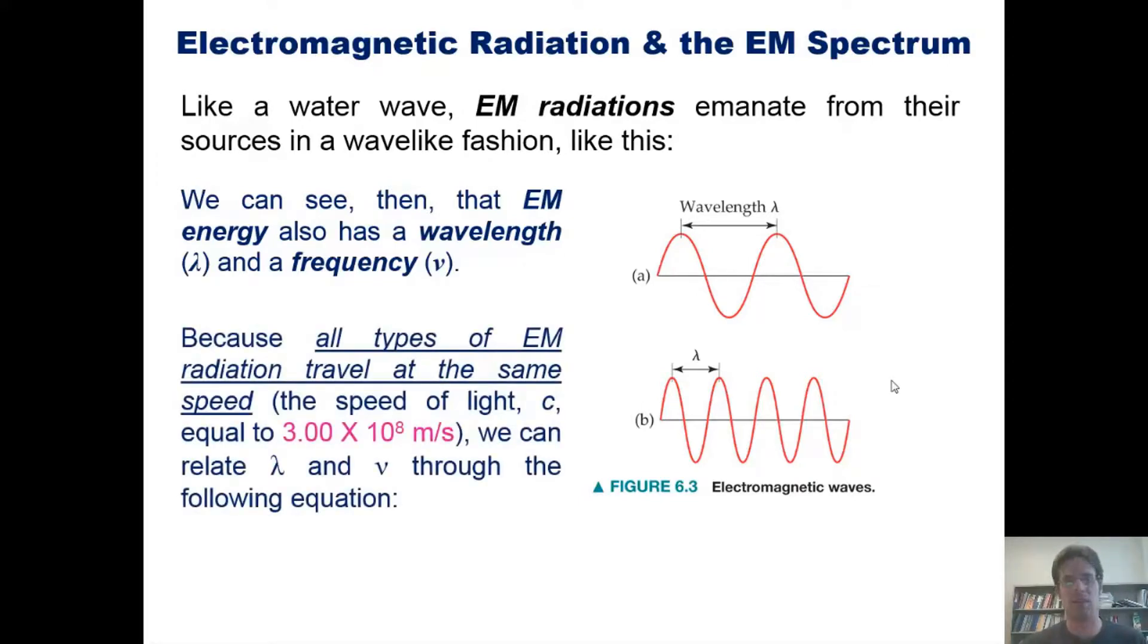It turns out all types of EM radiation travel at the same speed, which is the speed of light that happens to be 3 times 10 to the 8th meters per second, which is kind of fast. Because of that, we can relate wavelength and frequency using this equation from our text.